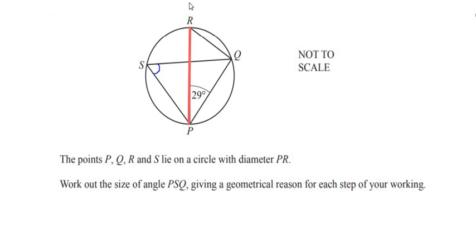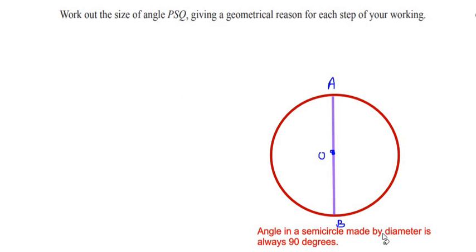Since PR is given as a diameter, we can think about a circle theorem which says that the angle in a semicircle made by a diameter is always 90 degrees.